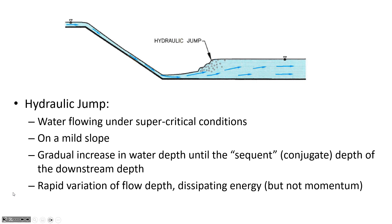A hydraulic jump occurs when supercritical flow encounters conditions where it can't be maintained because the slope is subcritical — a mild slope. If water picks up a lot of velocity down a spillway or steep channel segment and then encounters a mild channel segment, it has to go through a hydraulic jump. We talked last time about the momentum depth diagram and how we can find the sequent depths to the supercritical step — what the downstream depth will be after the hydraulic jump.